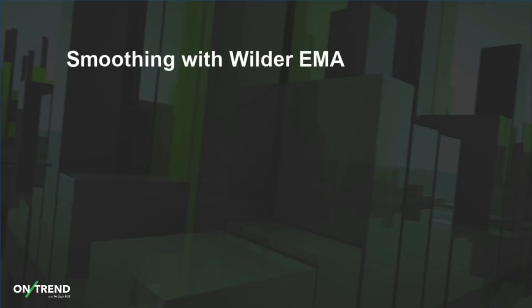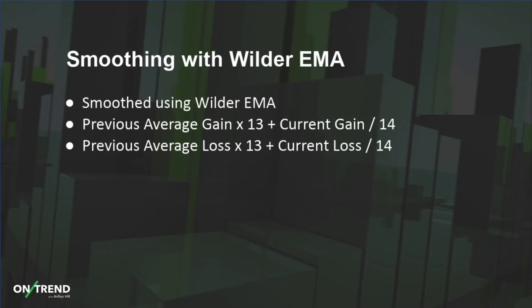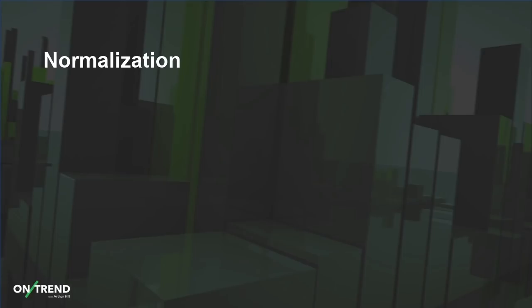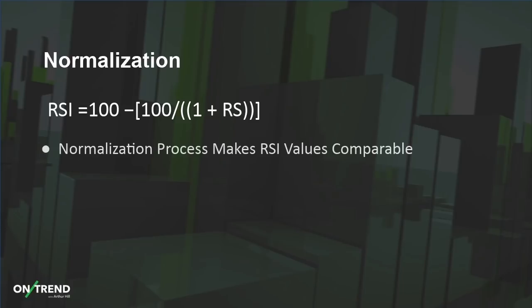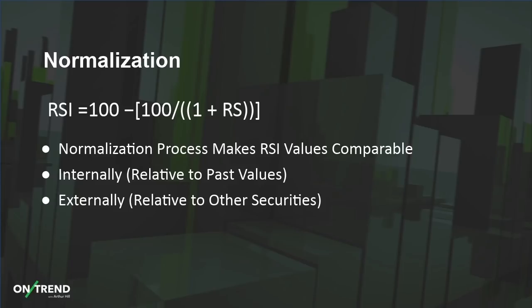There are a couple more steps in the RSI formula. There's the smoothing that Wilder used — he took the previous average gain, multiplied it by 13, added the current gain, and divided by 14. He did the same with the previous average loss. He also normalized the indicator, which is a very important step because normalization makes RSI values comparable not just internally but externally. By normalizing RSI into a range of 0 to 100, you can compare a current RSI value with previous RSI values, and also compare RSI values from one stock to another.